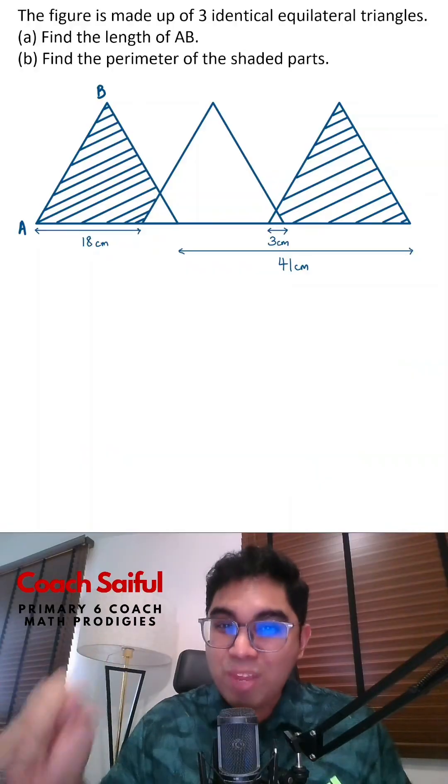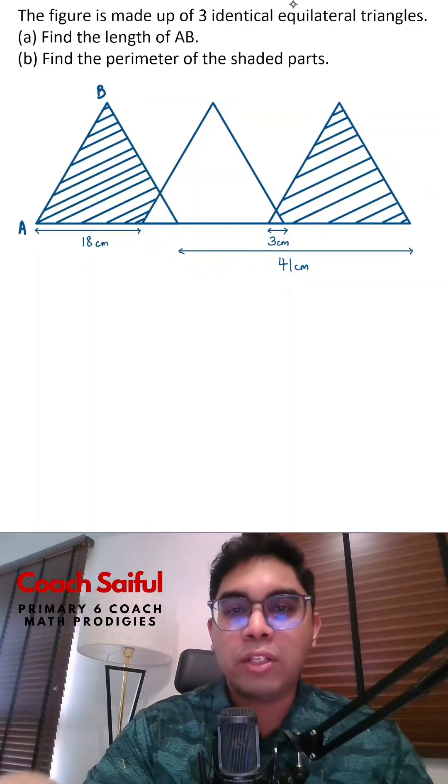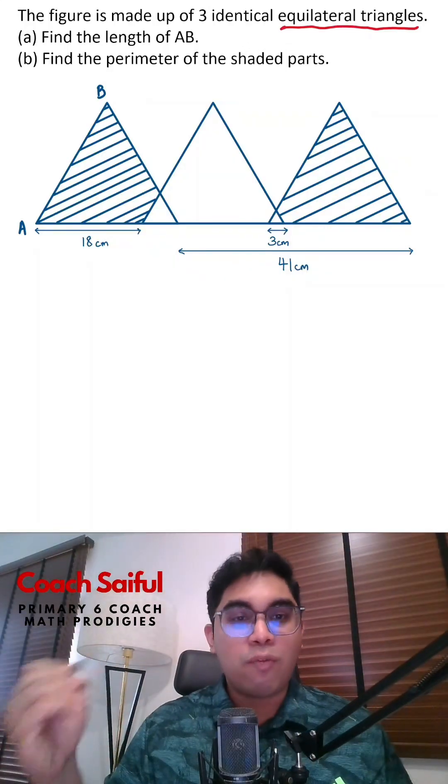The figure is made out of three identical equilateral triangles. Very important, they are equilateral triangles. Find the length of AB.